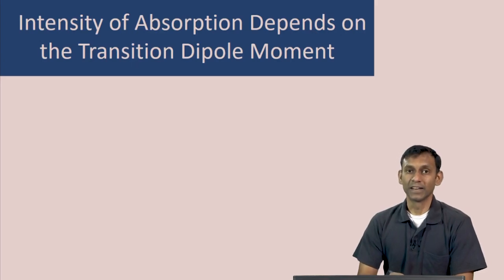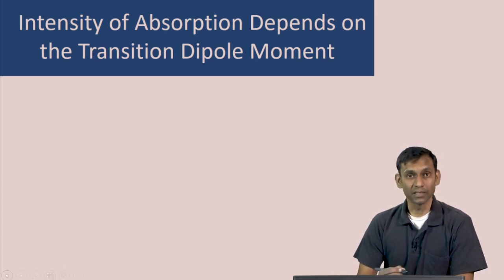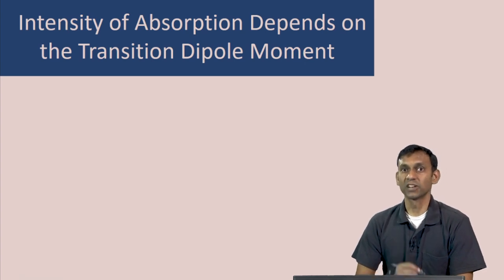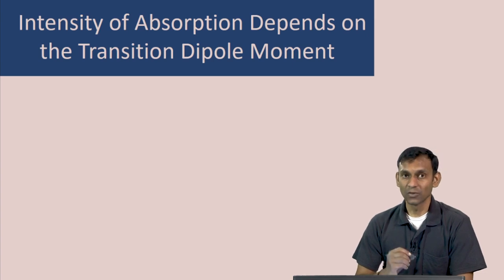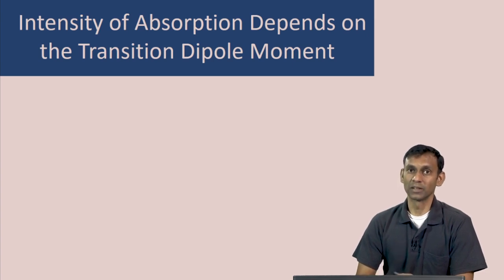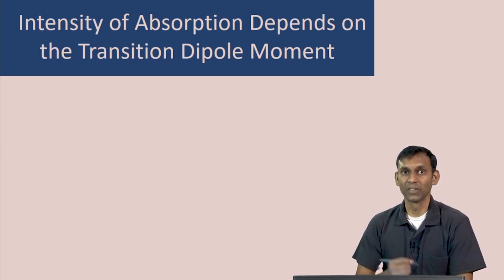One of the most important ideas in spectroscopy is that the intensity of absorption or emission of light by an atom or a molecule depends on the transition dipole moment of the atom or molecule. Let us look at what this transition dipole moment is first, and then in this lecture, we will derive that the intensity depends on this quantity.